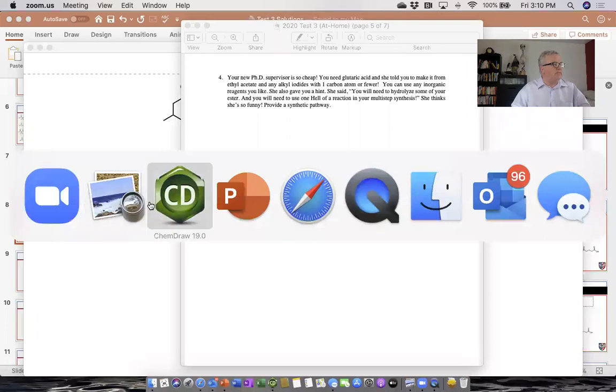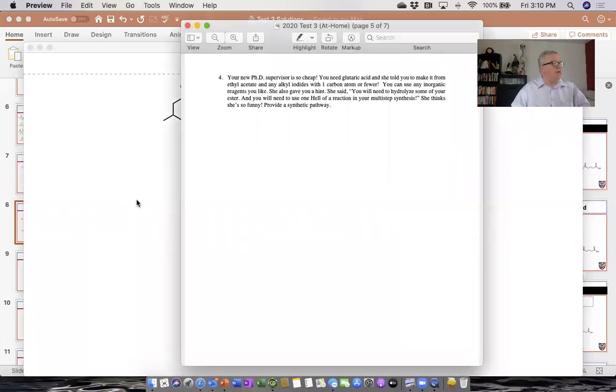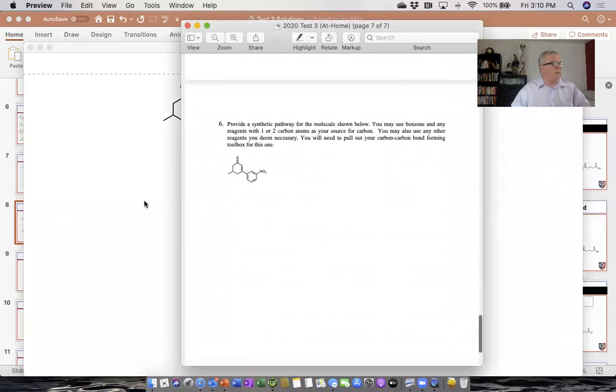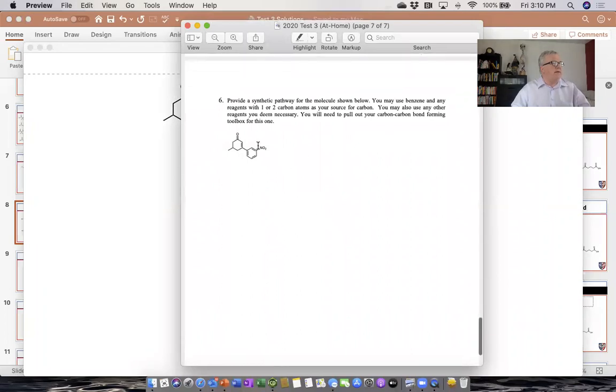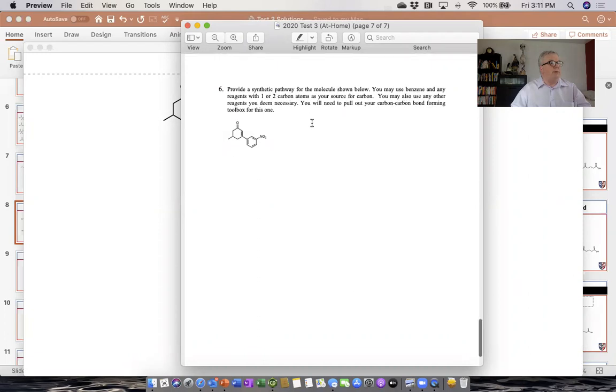So question six, let's take a look. Question six was a synthesis problem. We were asked to provide a synthetic pathway for the molecules shown below. You may use benzene and any reagents with one or two carbon atoms as your source for carbon. You may also use any other reagents you deem necessary. You will need to pull out your carbon-carbon bond forming toolbox for this one.